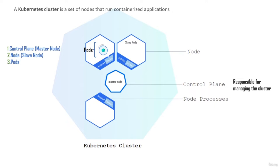Now let's talk about a Kubernetes cluster. A Kubernetes cluster is a set of nodes that runs your containerized application. There are three terms I'd like you to know: the control plane, the node, and the pods. The control plane, also called the master node, is responsible for managing the entire cluster. There is also the node, which can be termed as the slave node - basically just virtual machines if you're running in a cloud environment. Each node corresponds to a virtual machine if you're running in AWS or GCP, and it's within these virtual machines that your containerized application runs.